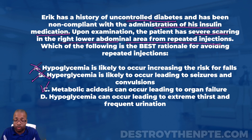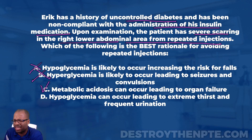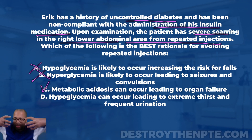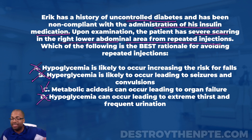Answer D says hypoglycemia — which we've already said is not likely in this case. But even reading the full answer: hypoglycemia can occur leading to extreme thirst and frequent urination — that's also wrong. Extreme thirst and frequent urination are consistent with hyperglycemia, not hypoglycemia. The patient has so much glucose in the bloodstream they try to dilute it by drinking a lot, leading to frequent urination.